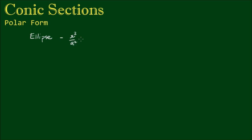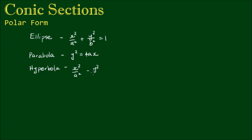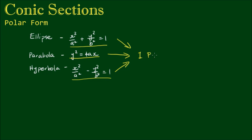In this and the next few videos we're going to look at the polar form of conic sections. By now you should be familiar with the three types of conic sections: the ellipse with standard equation x²/a² + y²/b² = 1, the parabola with standard equation y² = 4ax, and the hyperbola with standard equation x²/a² − y²/b² = 1. These are known as the Cartesian form. The cool thing about the polar form is that all of these equations can be reduced down to one form, and in this video we'll derive that equation.